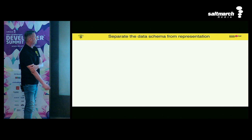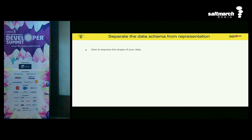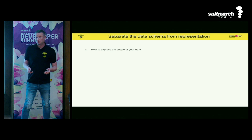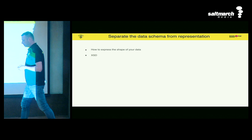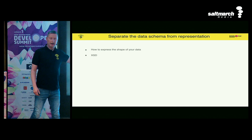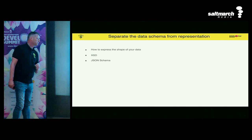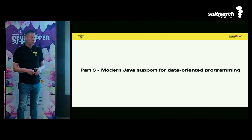The final principle — separating schema from representation — is about how you express the shape of your data. Some languages are type-agnostic; the type isn't specifically in the data itself. Typically, with XML or JSON, you don't know exactly what type something is — there's an external description in an XSD or JSON schema that tells you. That's the short intro. Now we get to Java and how Java supports data-oriented programming: records, sealed classes, pattern matching, and switch expressions for pattern matching.